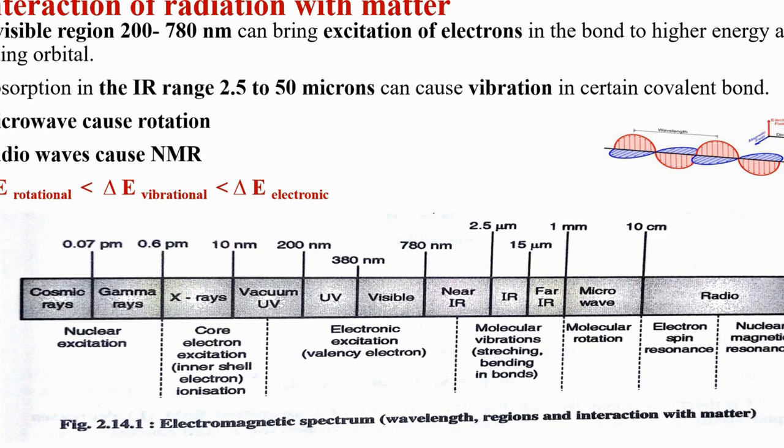Again, the excitation is going to be within the same energy level, but in rotational energy level. Radio frequencies cause nuclear spin of the atom. So, all the electromagnetic radiation spectrum causes different changes in the matter.